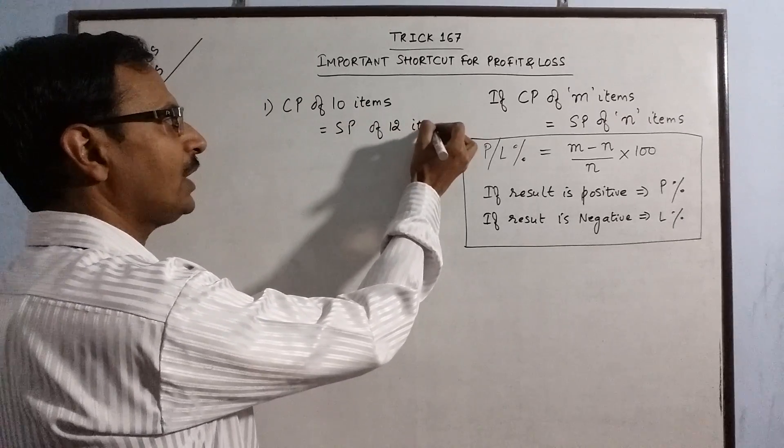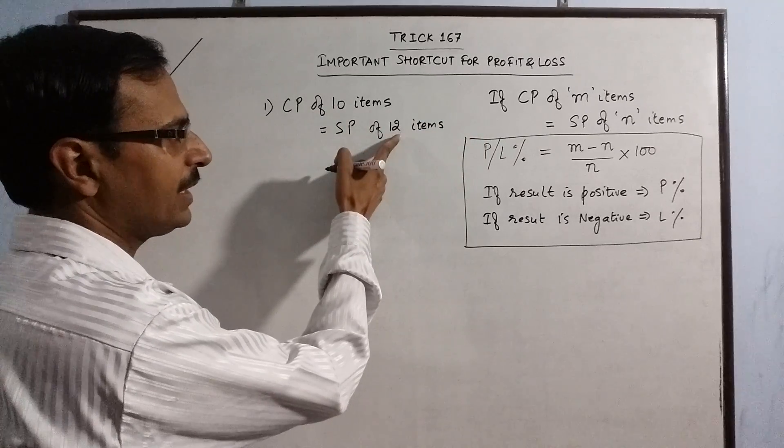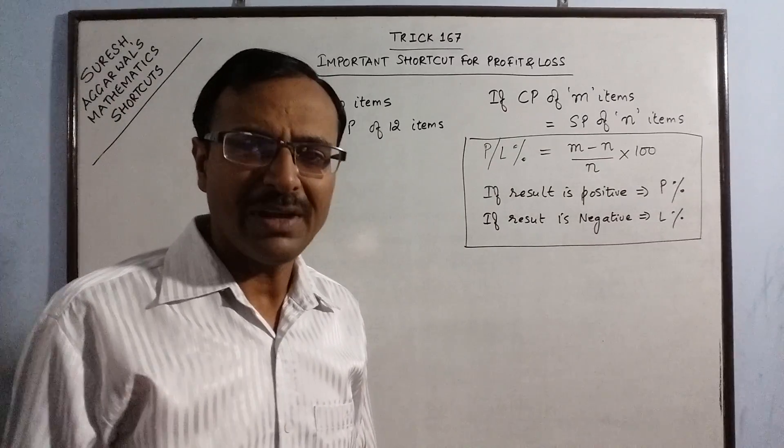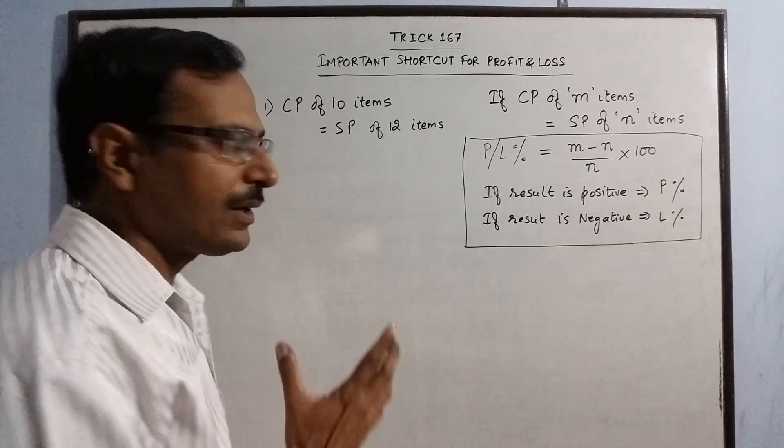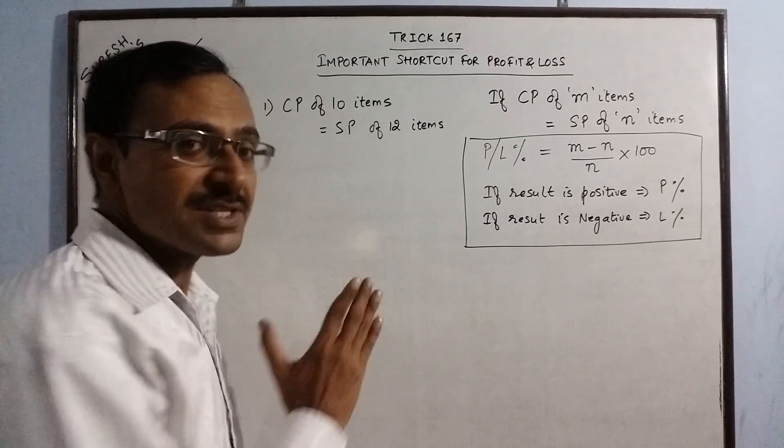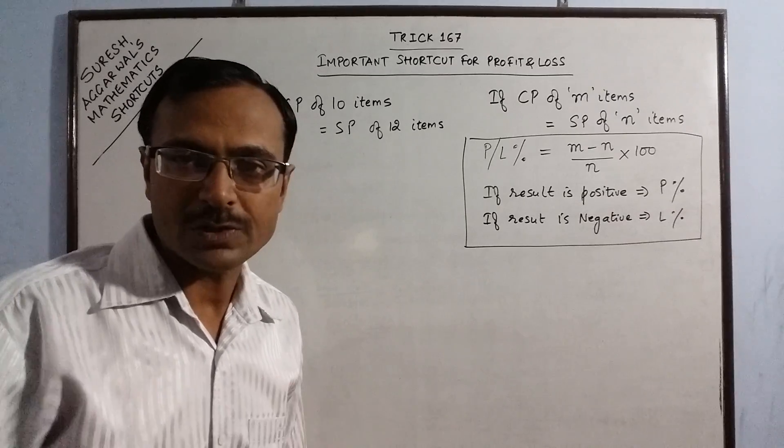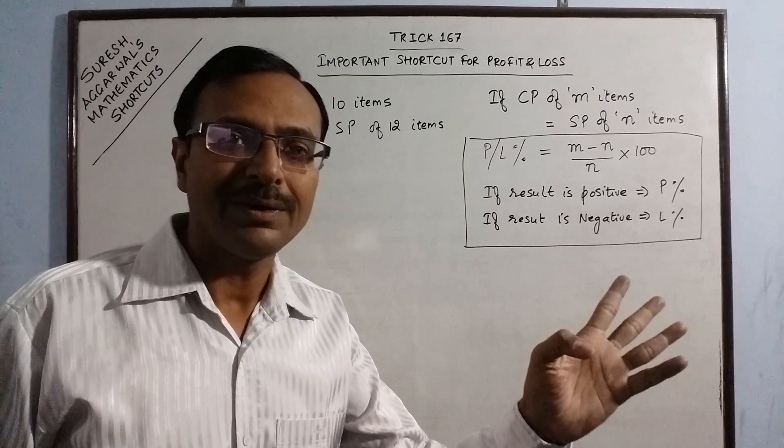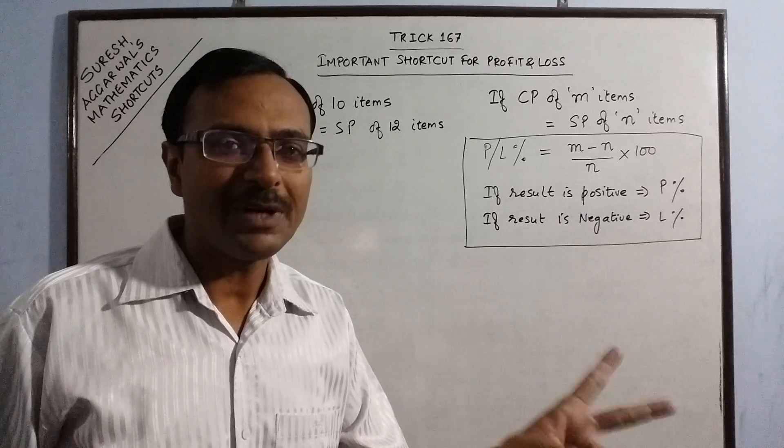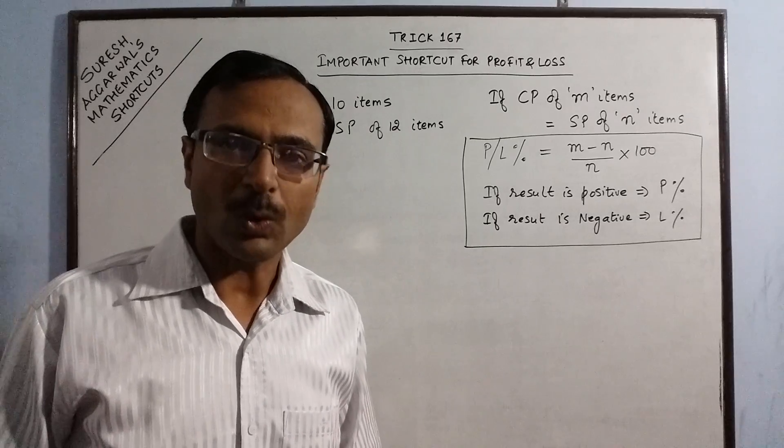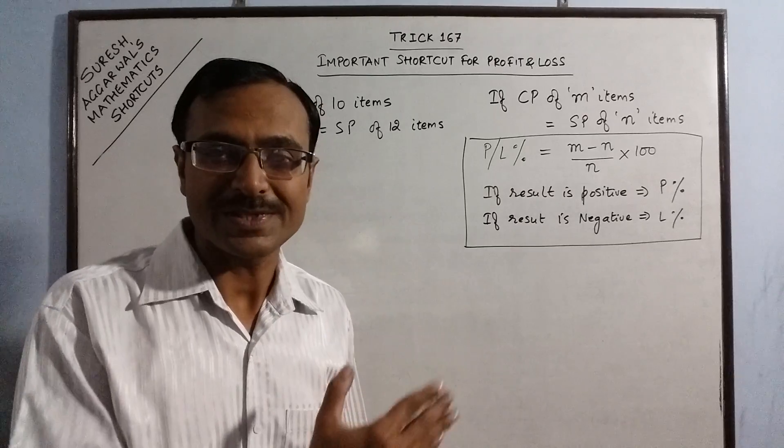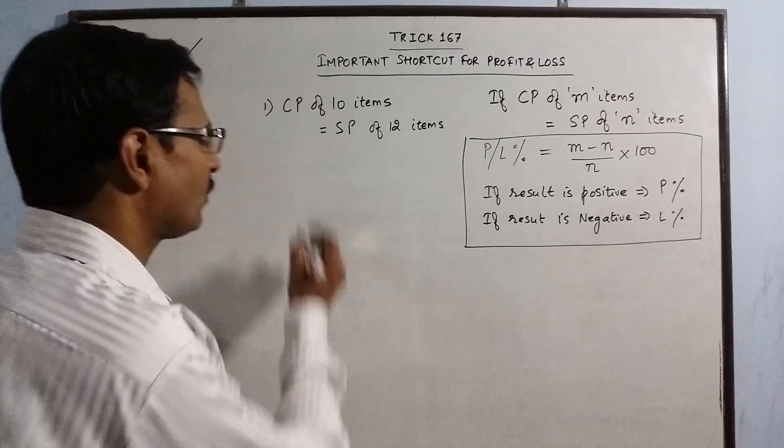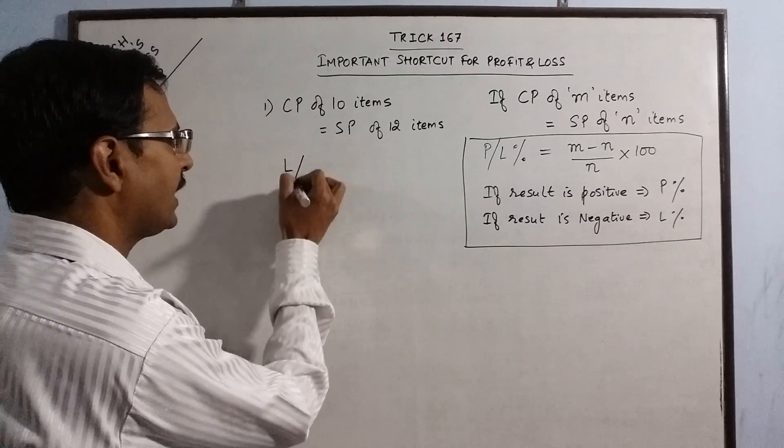Now, see here m is smaller and n is larger. So, m minus n will be negative. So, obviously, we will have loss percent. So, that is very easy and very accurate interpretation of the statement just by observation that we are going to have loss percent. So, if we have four options in the question and two options say profit percent is there, then obviously, we have to eliminate those two responses and we will consider only the responses in which we are given loss percent because this is smaller and this is larger. So, here we have loss percent.